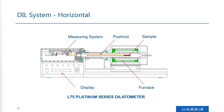Here is a schematic drawing of one of our dilatometers. What is used here is a pushrod, the yellow part, which is in contact with the sample. Whenever the sample is expanding or shrinking, this pushrod moves into the measuring system. The dimensional change of the sample can be monitored very sensitively, down to the nanometer range.